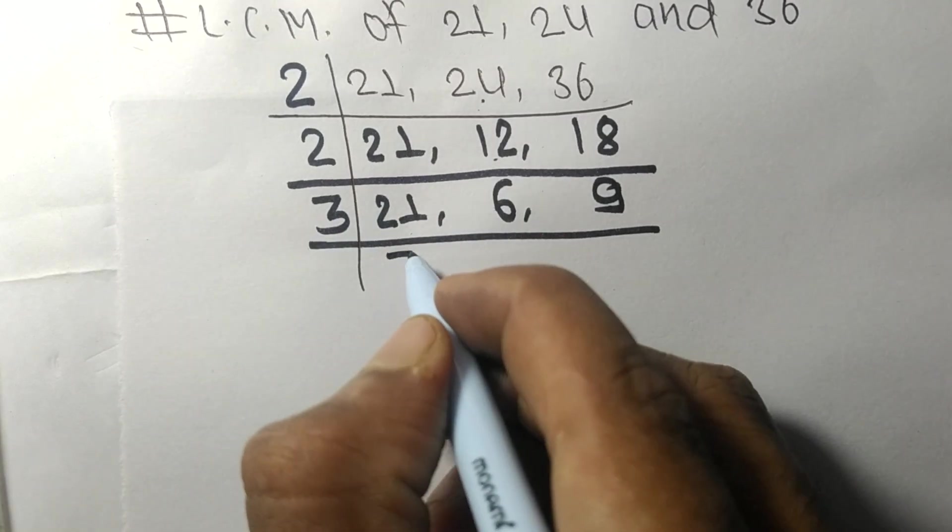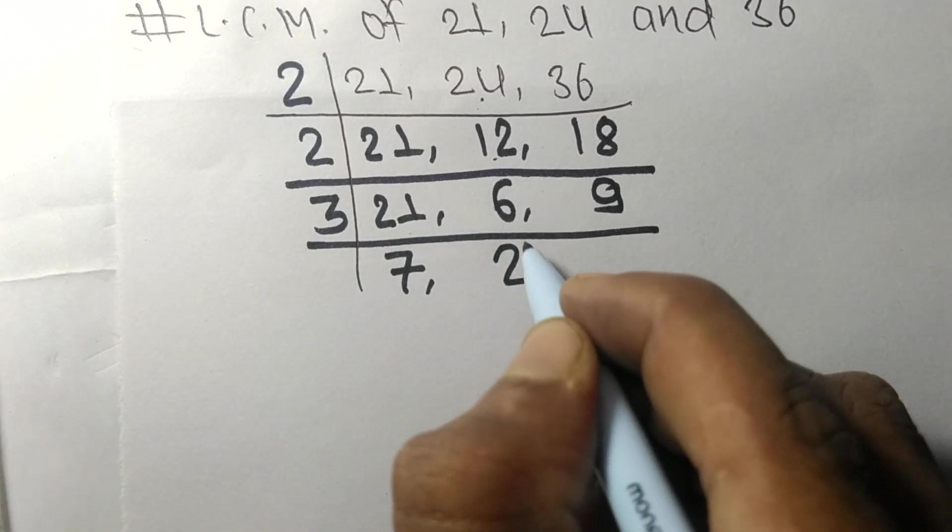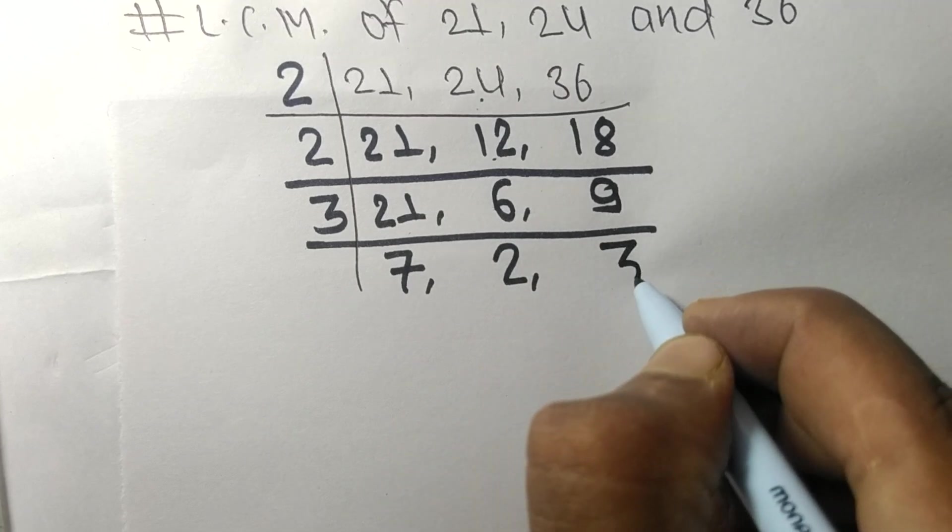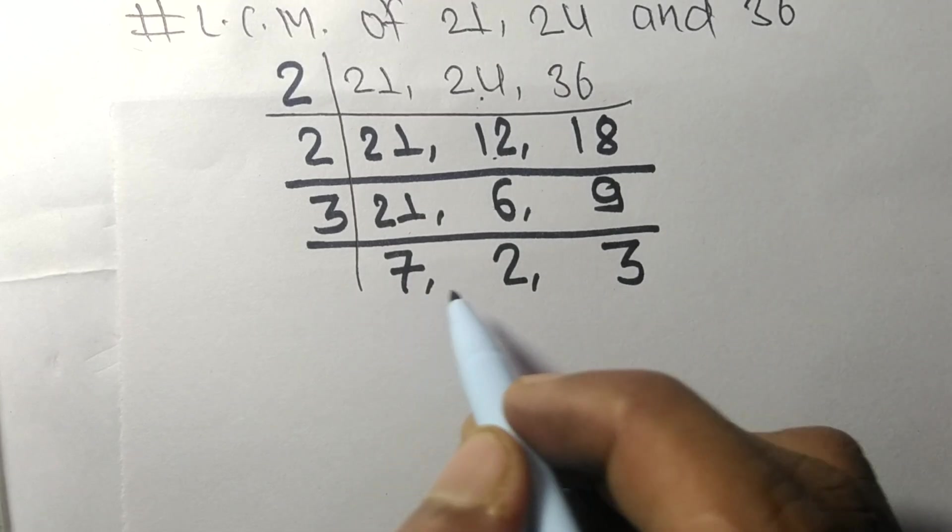3 times 7 equals 21, 3 times 2 equals 6, 3 times 3 equals 9. So now these 7, 2, and 3 are not divisible by the same number.